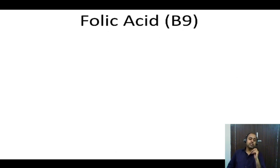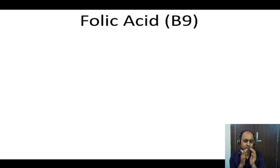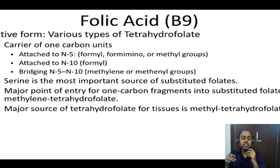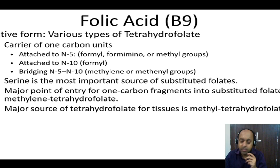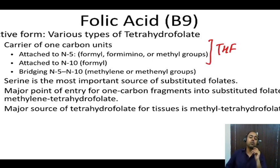Coming to folic acid (B9) and cobalamin (B12) — these are the vitamins of the blood (affecting RBC and WBC). More detailed coverage will be in the hematology section of pathology. The active form of folic acid is tetrahydrofolate (THF), which exists in various forms: N5-formyl-THF, formamino-THF, methyl-THF, N10-formyl-THF, methylene-THF, and methenyl-THF. All these represent active forms of folic acid.